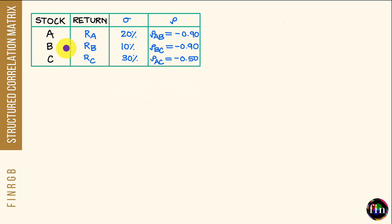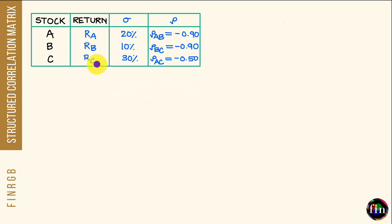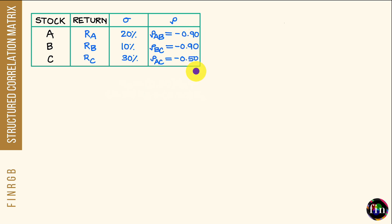Let's say we have three stocks — stock A, stock B, and stock C — and their respective random returns are denoted by RA, RB, and RC. We are given the individual standard deviations, or volatilities, of these three stocks, and we are also given the pairwise correlations between the returns of these stocks.